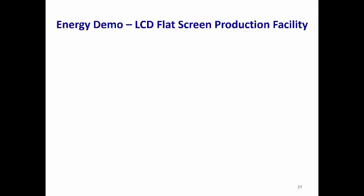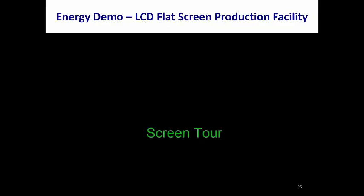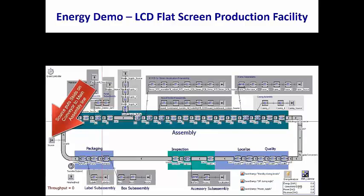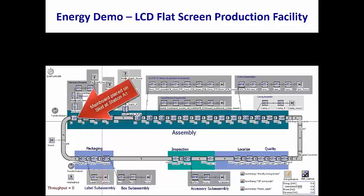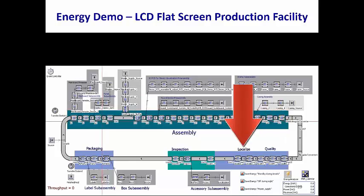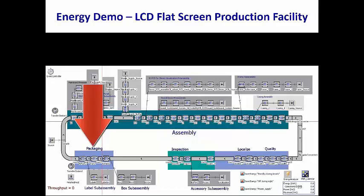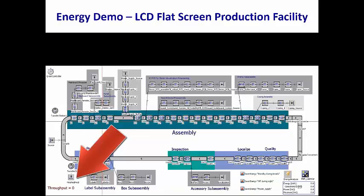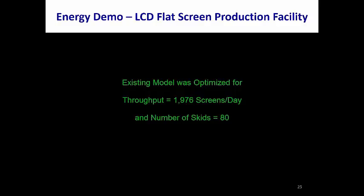We now have a video of an energy simulation of an LCD TV flat screen production facility. The source puts skids on the conveyor to the right, which moves skids up to the main assembly line. The main board is placed on the skid at station A1; the display panel is added at station A3. Other parts are added further down the assembly line, then the panel goes through quality, localize, inspection, packaging, and labeling processes, before being removed from the skid and transferred to the finished product drain. Using PlantSimulation's powerful tools, the existing model was optimized for a maximum throughput of 1,976 screens per day, and what-if experiments showed a minimum of 80 skids was required.